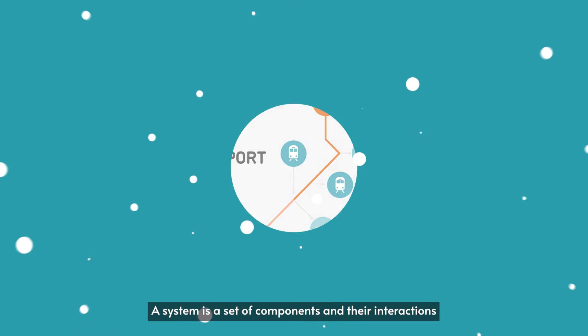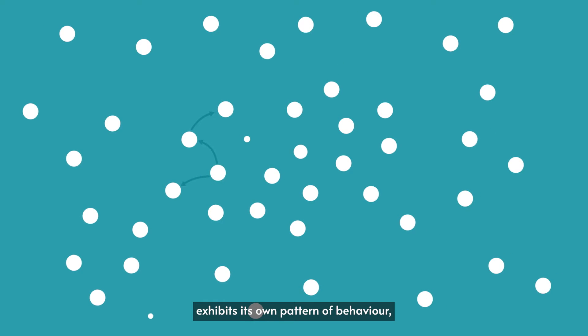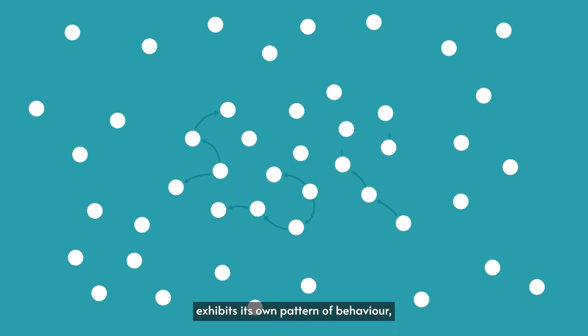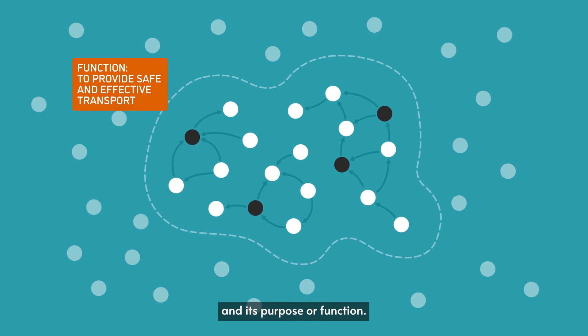A system is a set of components and their interactions that forms a unified whole, exhibits its own pattern of behavior, and is described by its boundary and its purpose or function.